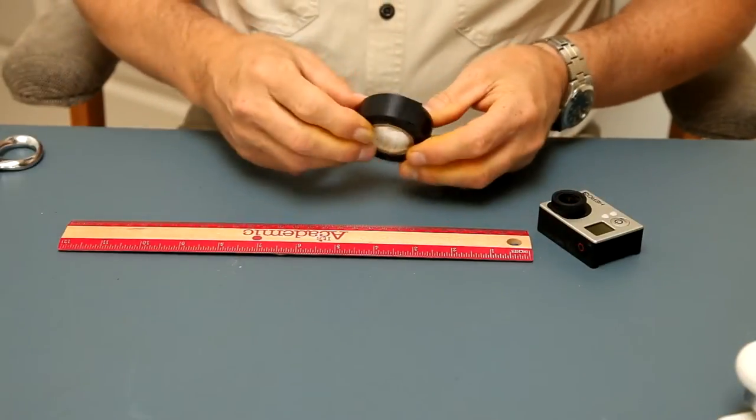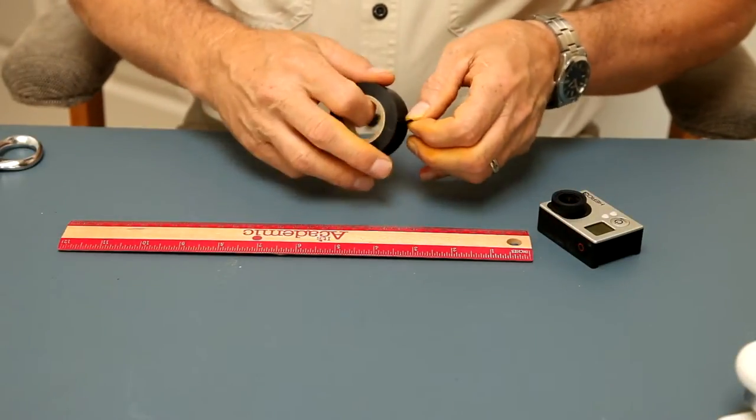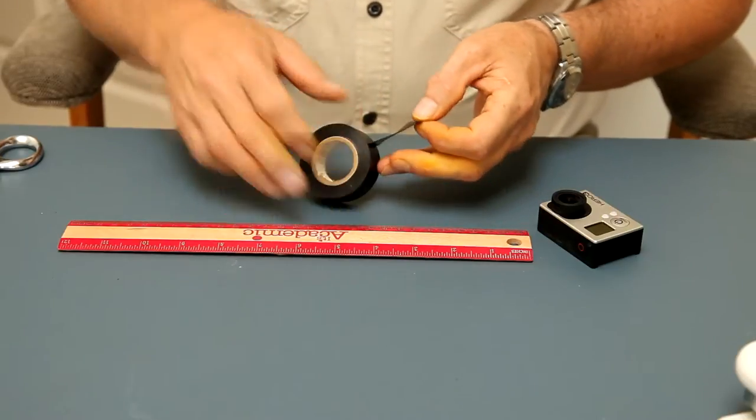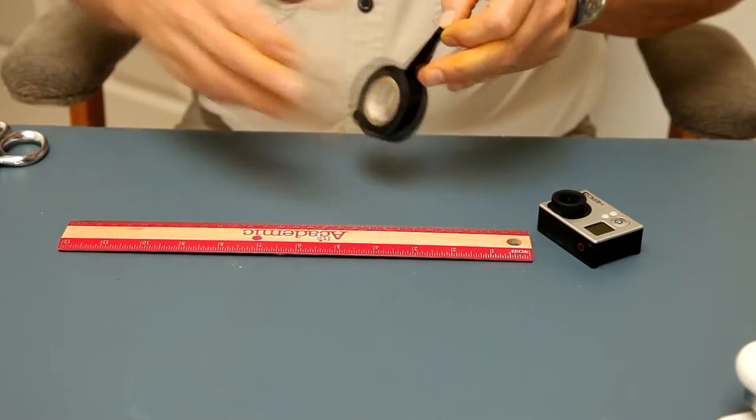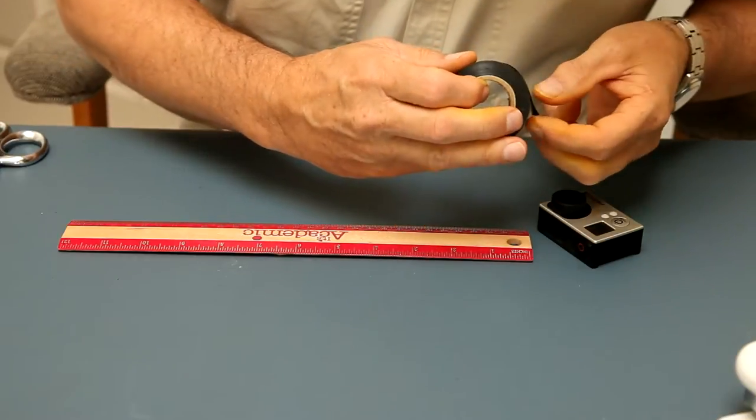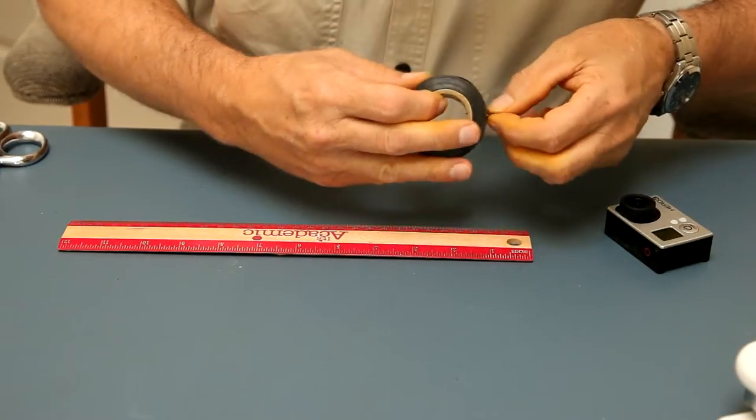So what we're going to do is cut some electrical tape here. We're going to cut it one and an eighth inch in length. And we'll measure it here. One and an eighth inch.